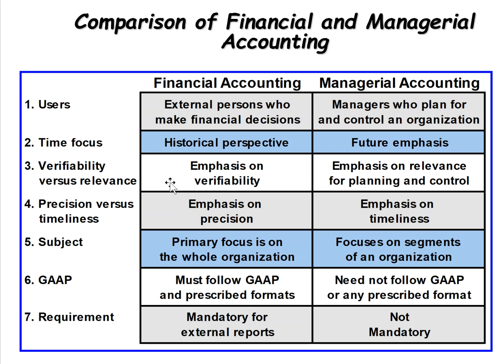The emphasis in financial accounting is on verifiability — we want to document everything so we can prove it actually happened. For managerial accounting, the focus is really on planning and control, so verifiability is not so important. Financial accounting is also focused on precision, whereas managerial is focused more on timeliness — getting information quickly. We might pull daily or even hourly reports, which just doesn't happen in financial accounting.